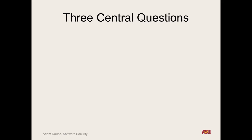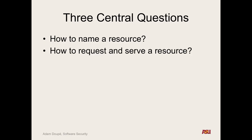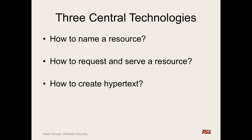There are three central questions that drive the architecture of the web — even crazy modern applications like Gmail or Google Maps are influenced by these three design questions. How do we name a resource? How do I name a document such that my cv.pdf is different from your cv.pdf? Once I have a name, how do I request that resource? And how does the other machine know how to serve me that resource? And finally, how do we create hypertext? The answer to naming resources on the web is URLs — or more precisely, URIs.